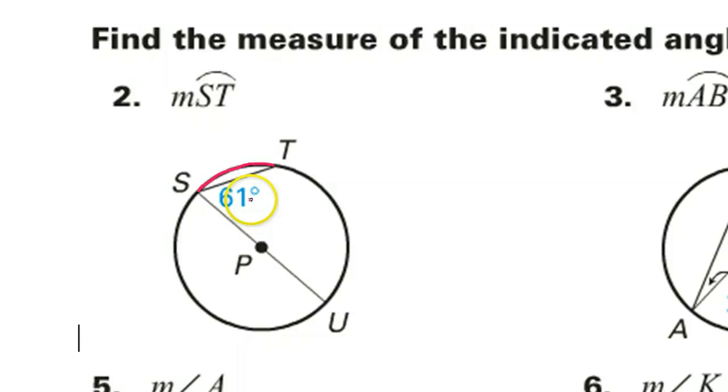So here's what you need to know. Looking at this arc that I'm drawing in green right now. This is the arc. The intercepted arc of the 61. So we know that if this is 61, this green arc should be double that. So 2 times 61 is 122 degrees.